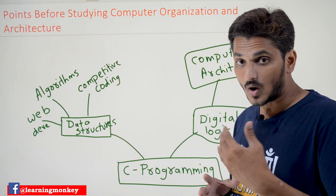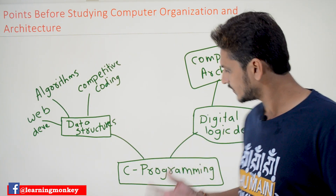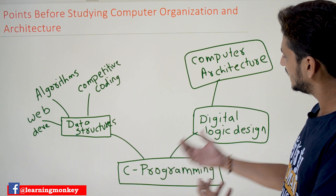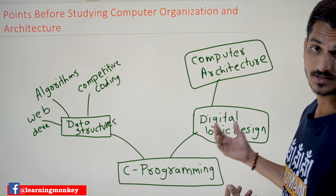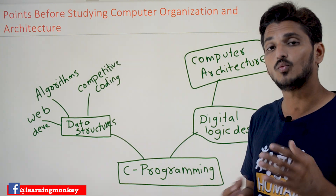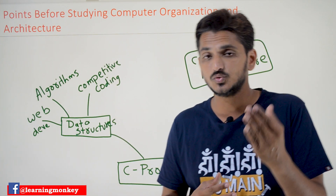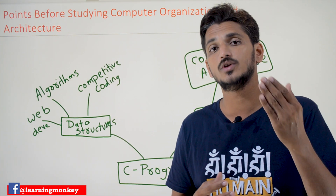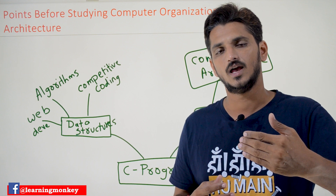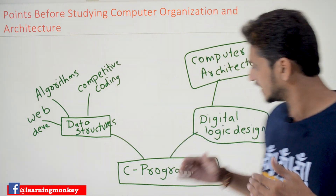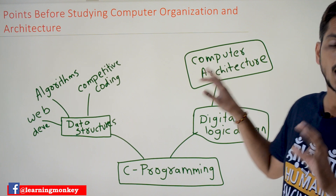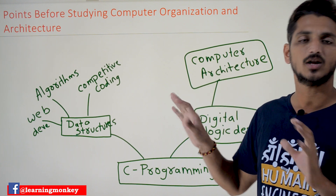In order to understand the hardware part, after completion of C programming one can start studying digital logic design. In our last video we clearly discussed what level of understanding a student gets after completion of digital logic design. After that, he can start studying computer architecture and organization.